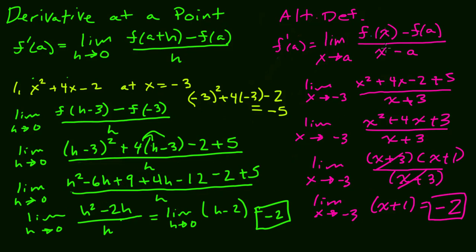What that means graphically: this function is a parabola, and at x equals negative 3, the tangent line through that point has a slope of negative 2. That's our first example.